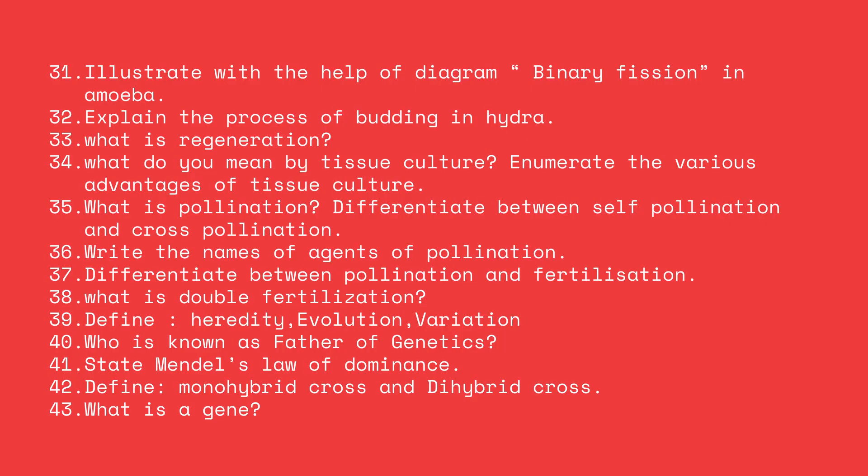Moving to reproduction in plants and animals: illustrate with the help of a diagram the binary fission in amoeba. Explain the process of budding in hydra. What is regeneration? What do you understand by tissue culture? Enumerate the various advantages of tissue culture.